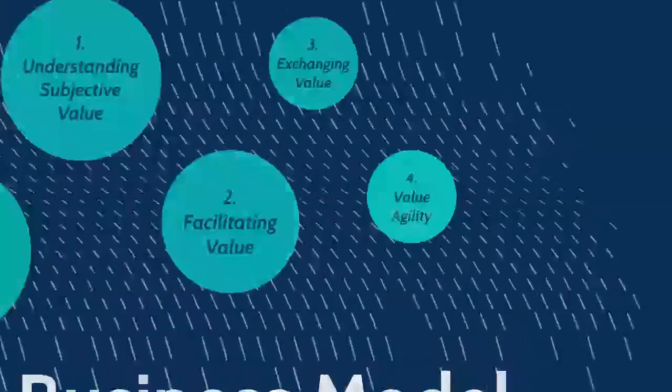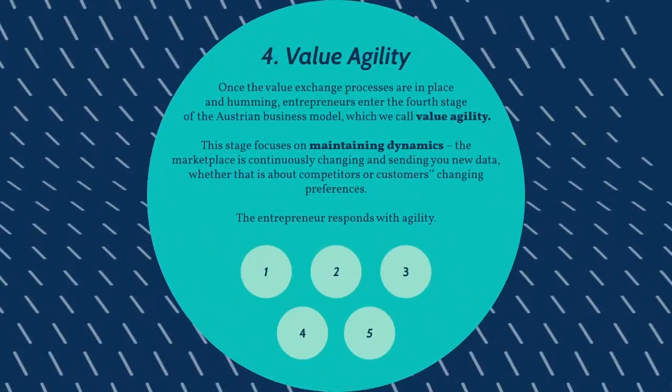Once the value exchange processes are in place and humming, entrepreneurs enter the fourth stage of the value-centric business model, which we call value agility. This stage focuses on maintaining dynamics. The marketplace is continuously changing and sending you new data, whether that's about competitors or customers' changing preferences. The entrepreneur responds with agility.